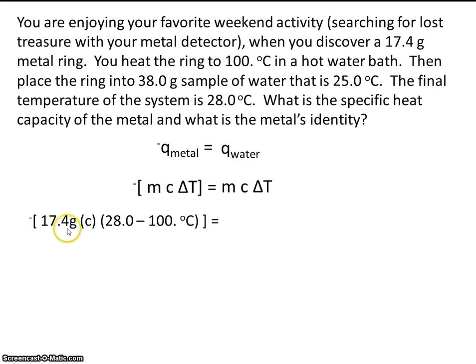The ring has a mass of 17.4 grams. What they're asking for in the problem is what's the specific heat capacity of the ring? So, that's C. And temperature final minus temperature initial. We know that the ring's temperature started at 100 degrees C. And then, when we placed it into the cooler water, it reached the final temperature of 28 degrees C. So, this is the mass of the ring. This is the specific heat capacity of the ring. And this is the temperature change experienced by the ring. It went from 100 degrees to 28 degrees.